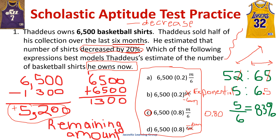So your answer is C. Why isn't it 20%? You're not left with 20% — you're left with 80%. And this M is just a distractor, but it really represents 12 months, because it's M over 6. If you plug in 12, 12 over 6 is 2. M is months — they told you that because they said 'six months' in the problem.